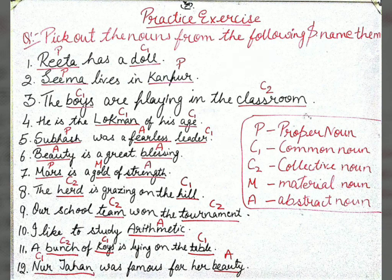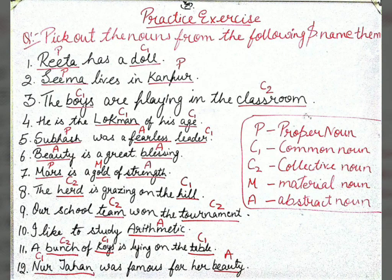In the answers I have underlined the noun and written the short form: P stands for proper noun, C1 stands for common noun, C2 stands for collective noun, M for material noun, and A for abstract noun. You can tally these with your own answers to get the topic clear.